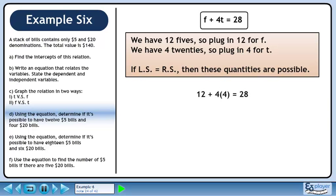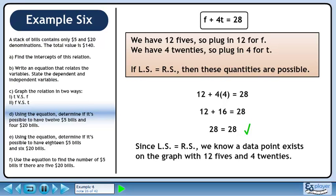Plug in 12 for f and 4 for t. Now we have 12 plus 16 equals 28. This evaluates to 28 equals 28. Since the left side equals the right side, we know a data point exists on the graph with 12 5s and 4 20s.